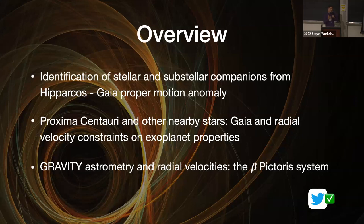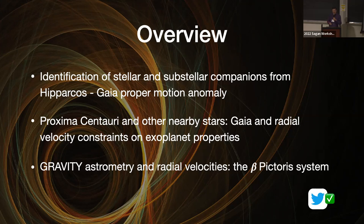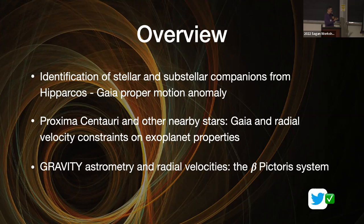I will finish with a slightly different instrument, which is the GRAVITY instrument — an interferometric beam combiner installed at the VLTI in Chile — and how we can use astrometry collected with this instrument together with radial velocities, in the case of the Beta Pictoris system.